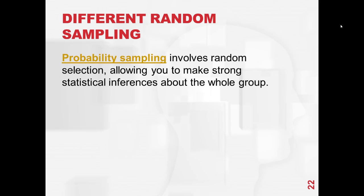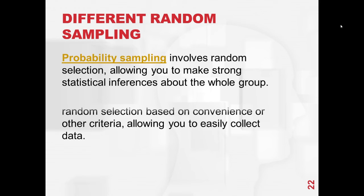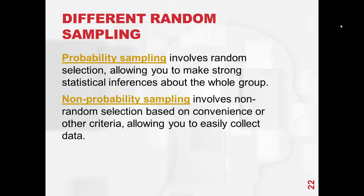Probability sampling involves a random selection, allowing you to make strong statistical inferences about the whole population. Non-probability sampling involves non-random selection based on convenience or other criteria, allowing you to easily collect data.